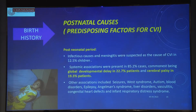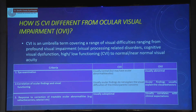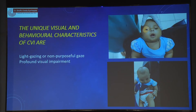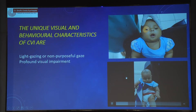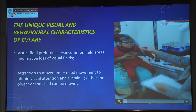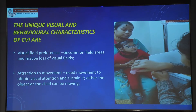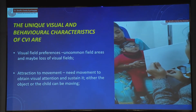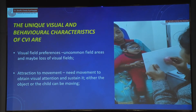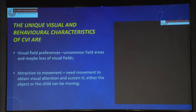Post-natal causes: most had cerebral palsy — 19.3% of patients. In CVI the ocular finding and visual function grossly do not correlate at all, while in OVI the ocular examination is abnormal. If you try to treat for amblyopia, the response is very suboptimal. Unique characteristics include poor gaze and head holding. There are field effects — we use a white board and see where the field is defective, checking up-gaze or down-gaze. These are all simple tests you can do in the OPD without a lot of money to start a CVI clinic.